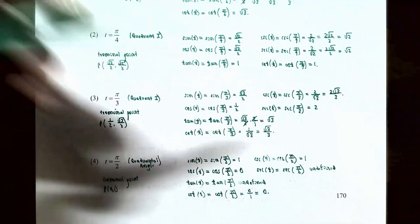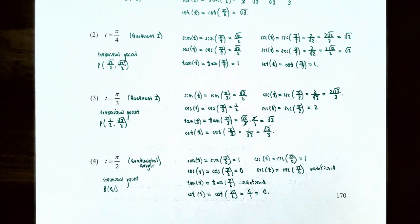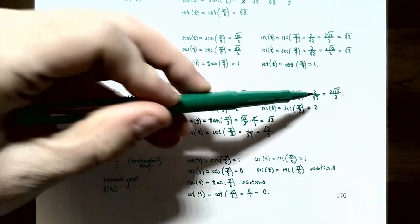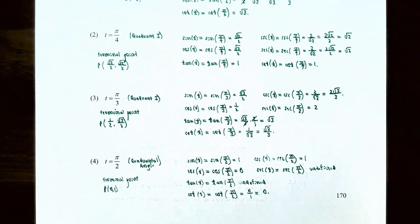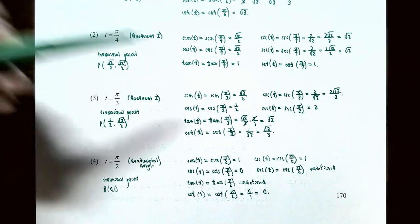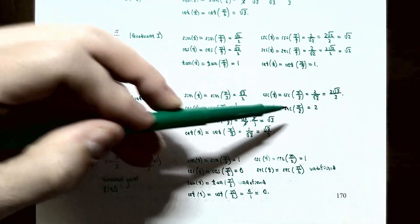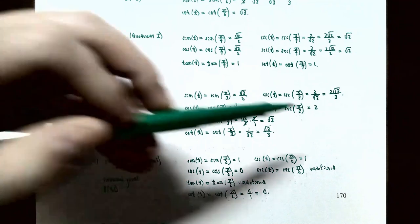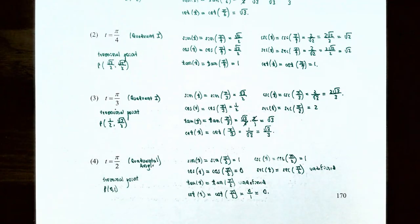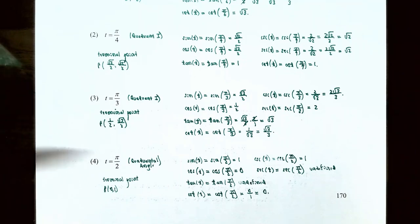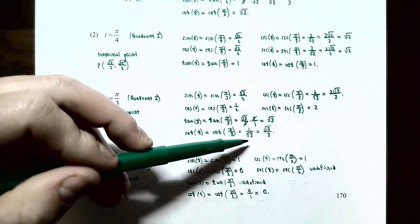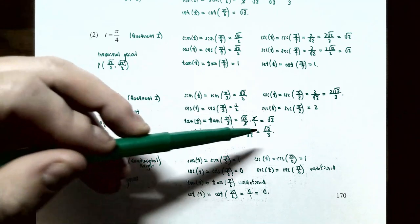Secant of pi over 3 is the reciprocal of the x-coordinate: 1 ÷ (1/2) = 2. Cotangent of pi over 3 is x divided by y: (1/2) ÷ (√3/2) = 1/√3, which rationalizes to √3/3.